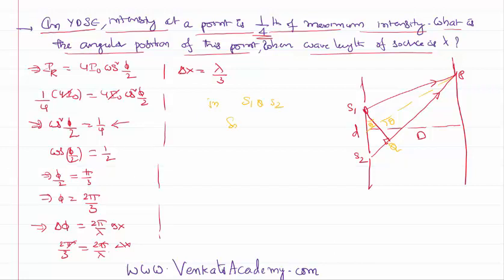In the right angle triangle S₁QS₂, we can write sin θ as this path difference δx by d. That implies δx equals d sin θ. We have already proved it in previous video lessons. I've shown this here to reinforce the concept. We got in this problem that δx is λ/3.